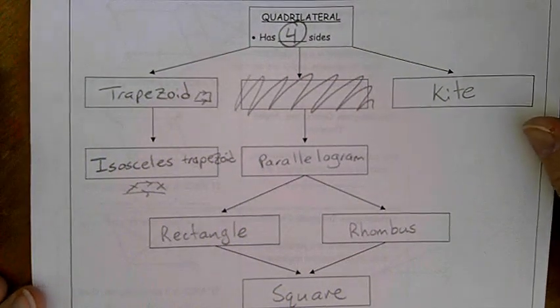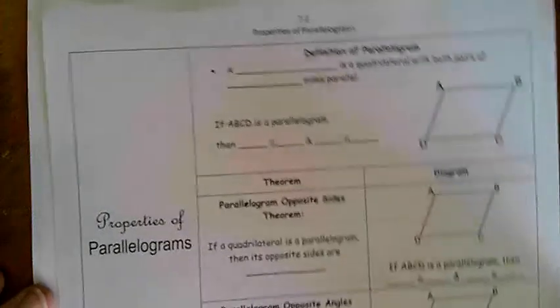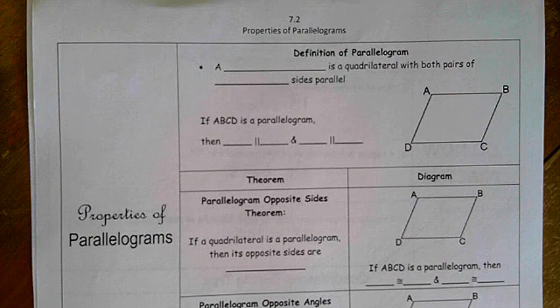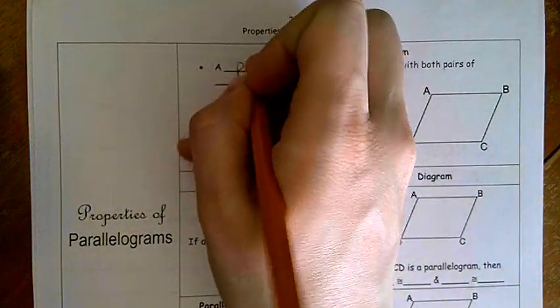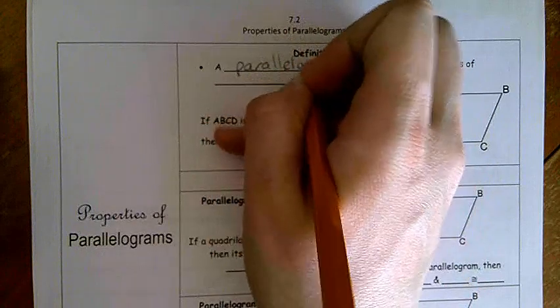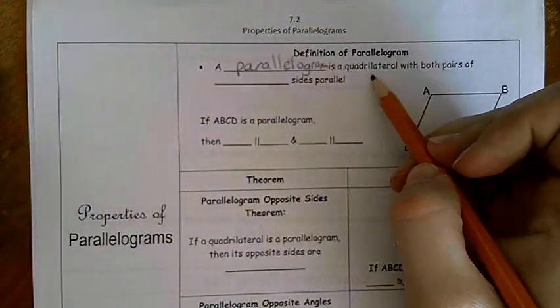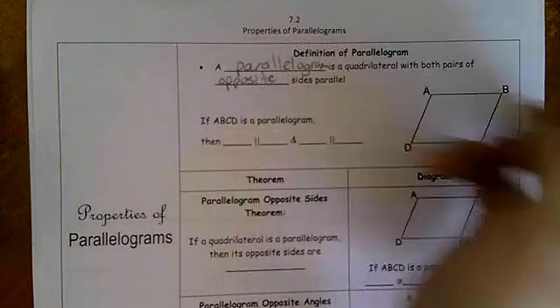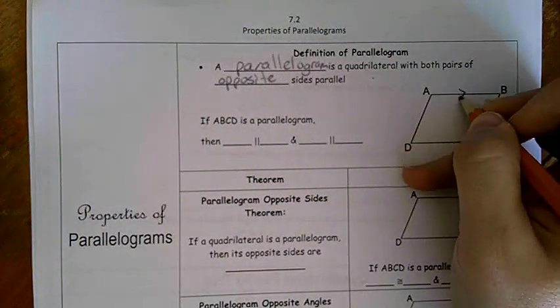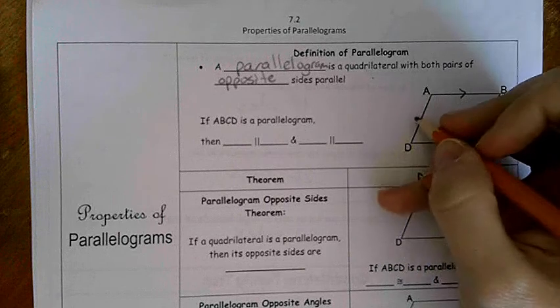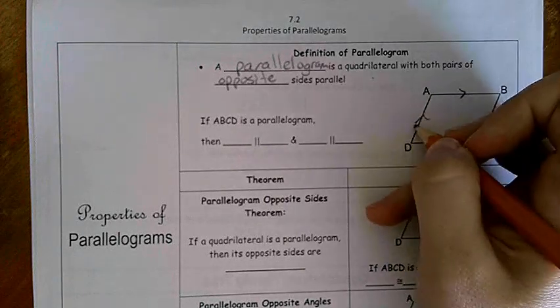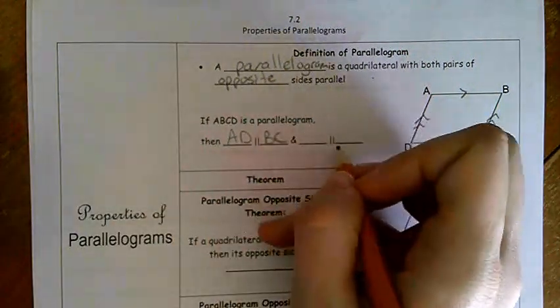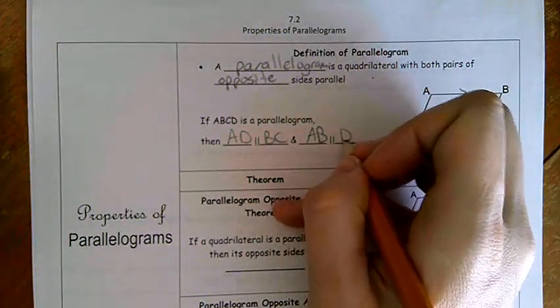Let's take a look at some of our special properties. If we flip over to the next page, the definition of a parallelogram is a quadrilateral with both pairs of opposite sides parallel. So we know that AB and DC are parallel, and AD and BC are parallel. AD is parallel to BC, and AB is parallel to DC.